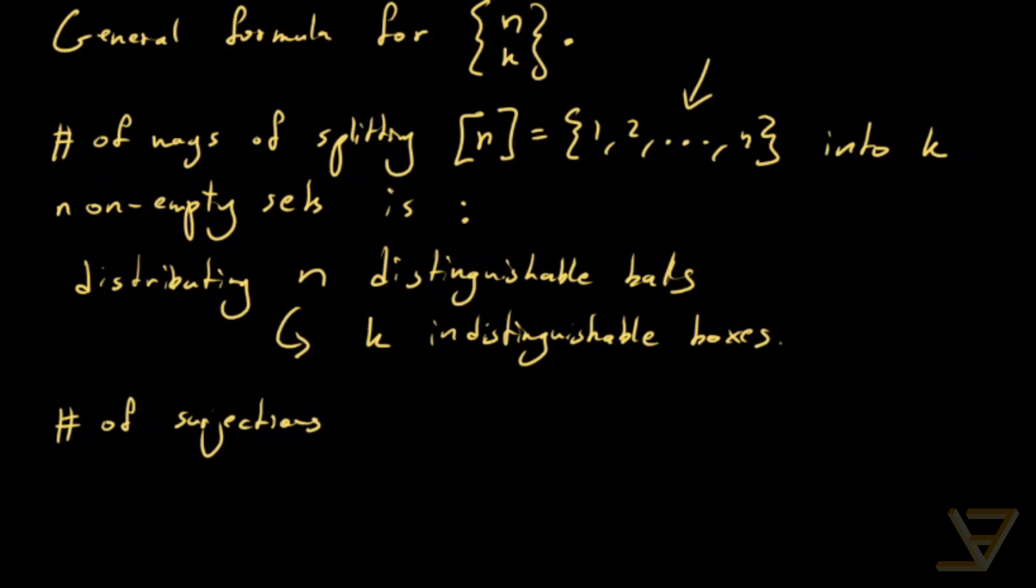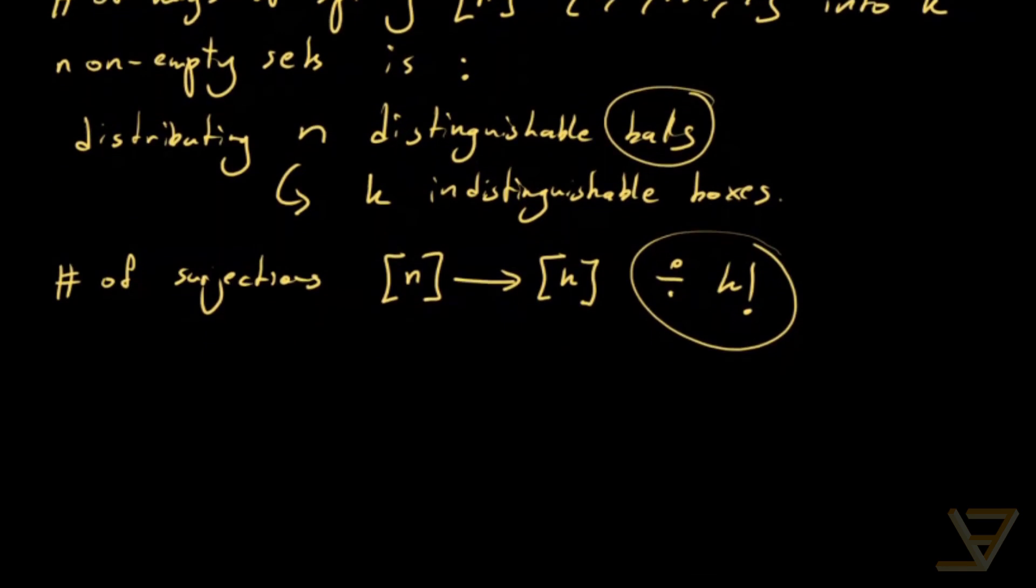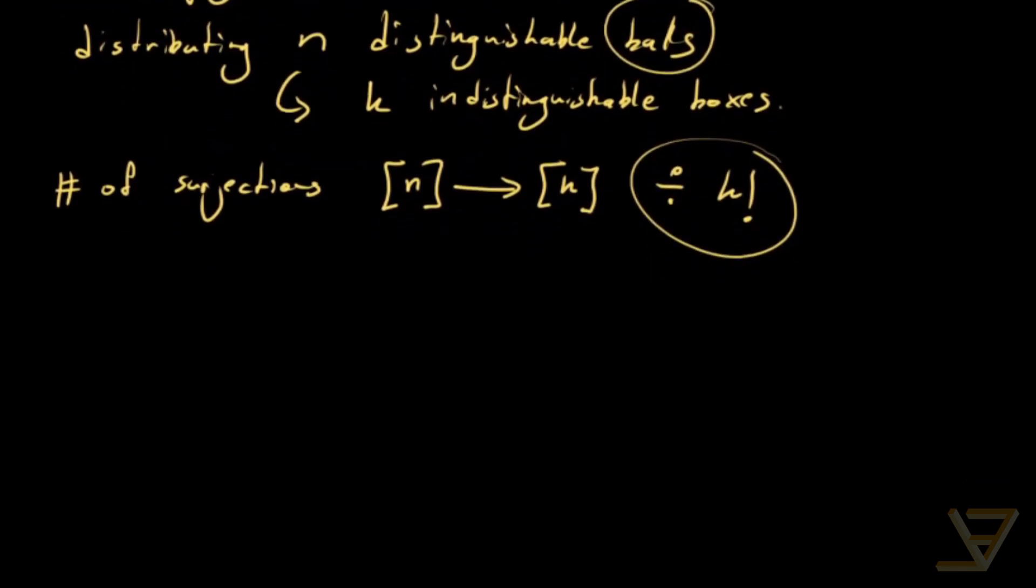If you think about it, it's the number of surjections from the first N integers into the first K integers divided by K factorial. And we're dividing by K factorial because the order of the boxes doesn't matter. The balls themselves are distinguishable. So we're looking at functions from N into K, but we have to divide by K factorial in the end to account for the fact that if you reorder the boxes, it doesn't matter what happens.